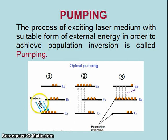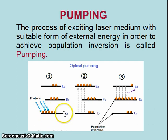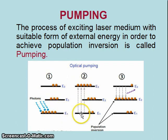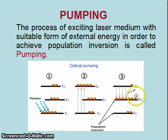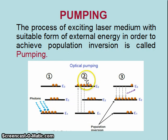Here we use optical pumping, meaning light energy stimulates the atoms which are in the ground state. When light energy is absorbed by these atoms, they go to the excited state. This process is called pumping — the process of exciting the laser medium with a suitable form of energy in order to achieve population inversion. It is called pumping.